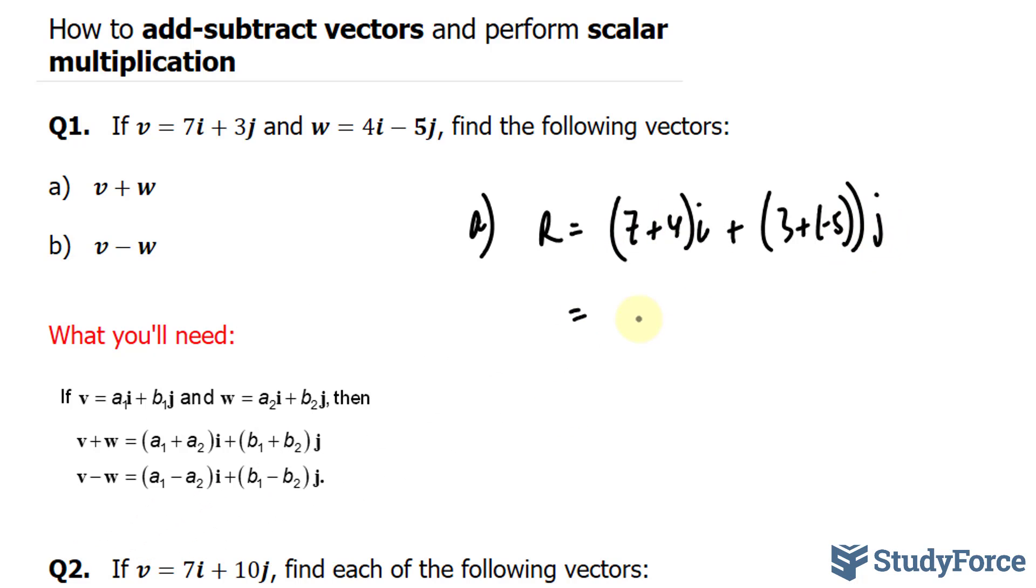Let's simplify. 11i and that is minus 2j. So our resultant vector has an x component of 11 and a y component of negative 2 units.